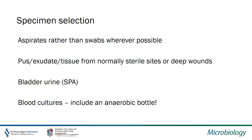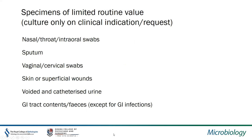Specimens you would not want to focus on include anything superficial, sputum samples, anything with undefined microbiota already present where you can't determine what's causing infection. Vaginal swabs, superficial skin wounds, voided and catheterised urine, and anything from the GI tract should be avoided — except in cases of GI infections, of course.